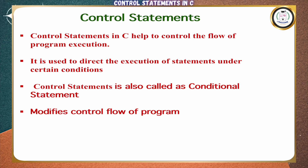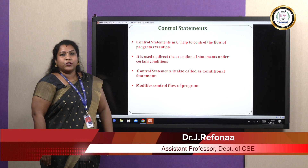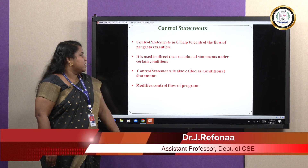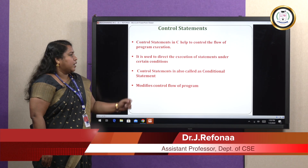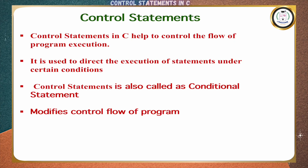Control statements in C help to control the flow of program execution. They are used to direct the execution of statements under certain conditions. Control statements are also called conditional statements and they modify the control flow of a program.